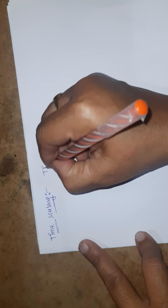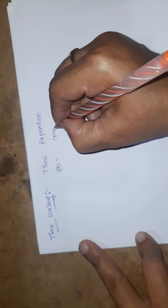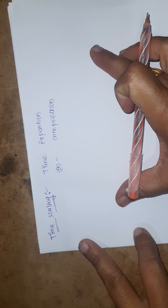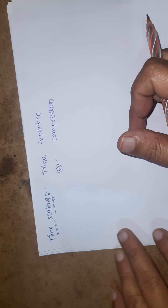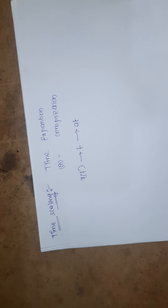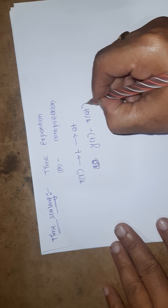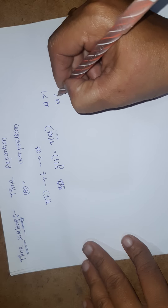Time scaling may be time expansion or time compression. Time means on the x-axis. On the x-axis we are having the signal, and scaling means either expansion or compression. The time scaling of signal x(t) can be accomplished by replacing t with a·t, giving y(t) = x(a·t). Here a may be greater than 1 or a may be less than 1.